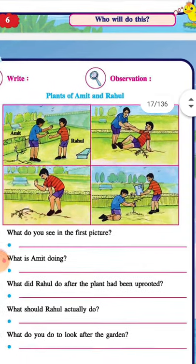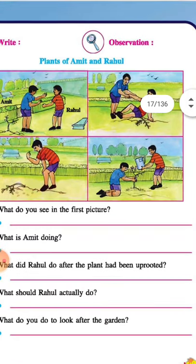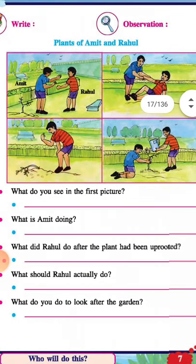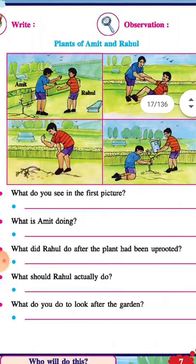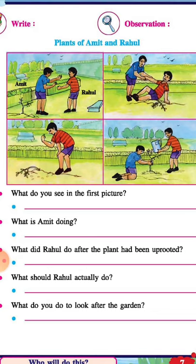Now we have to observe the next picture — plants of Amit and Rahul. Here two friends are there: Amit and Rahul. You can see Amit here, and the second friend is Rahul. They are in a park.